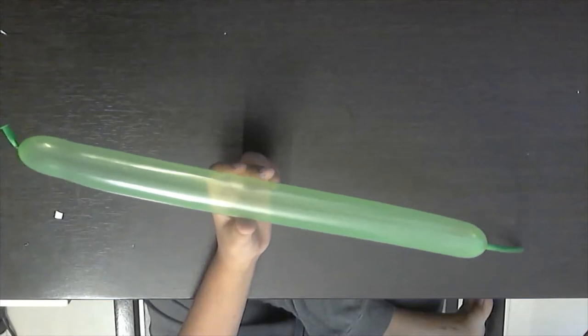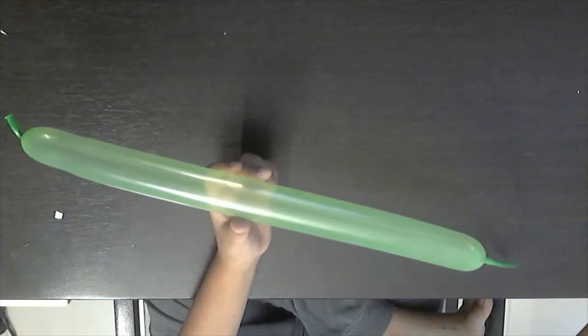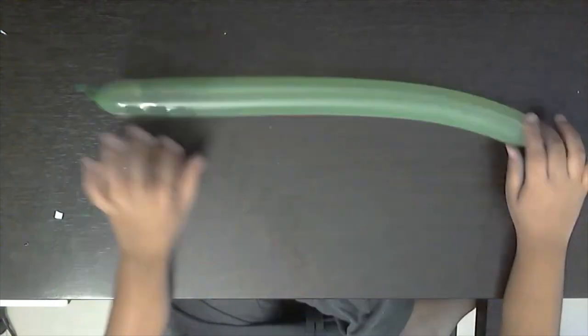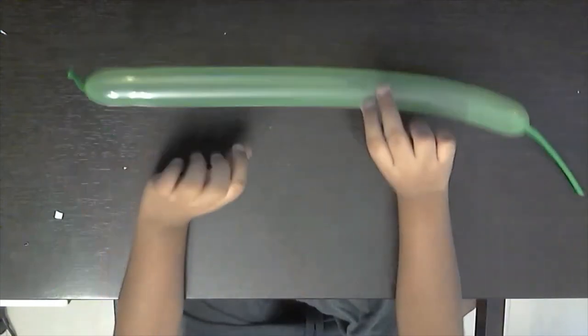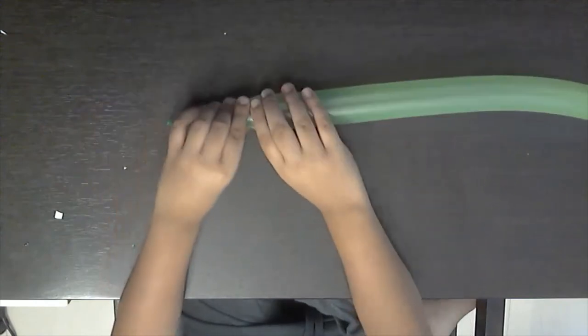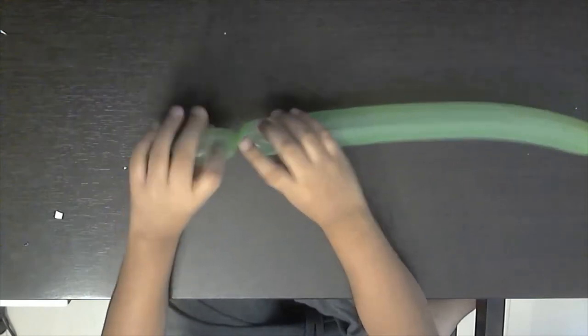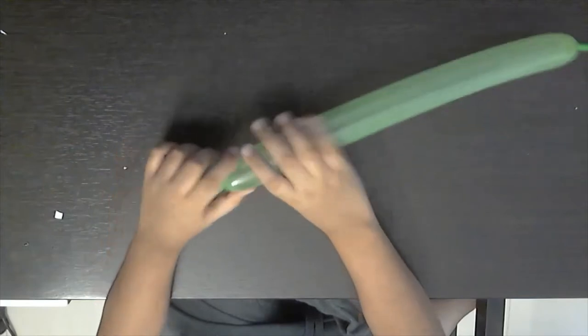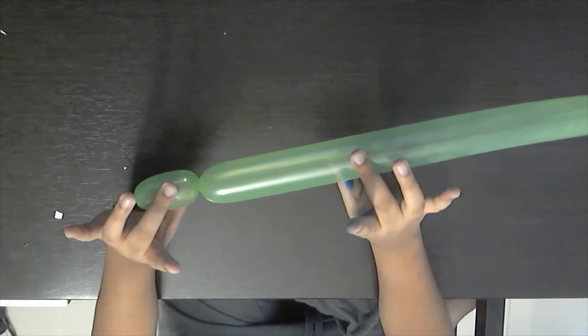Now with our balloon we are going to make our balloon parrot as I said. We keep our balloon over here. The first thing we're going to do from the nozzle side is a small basic twist. That's known as the basic twist.